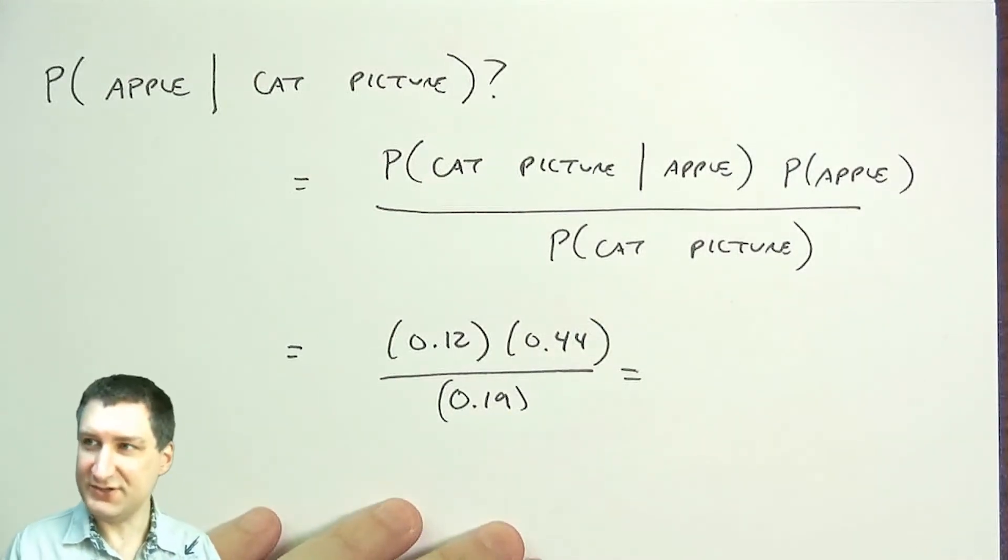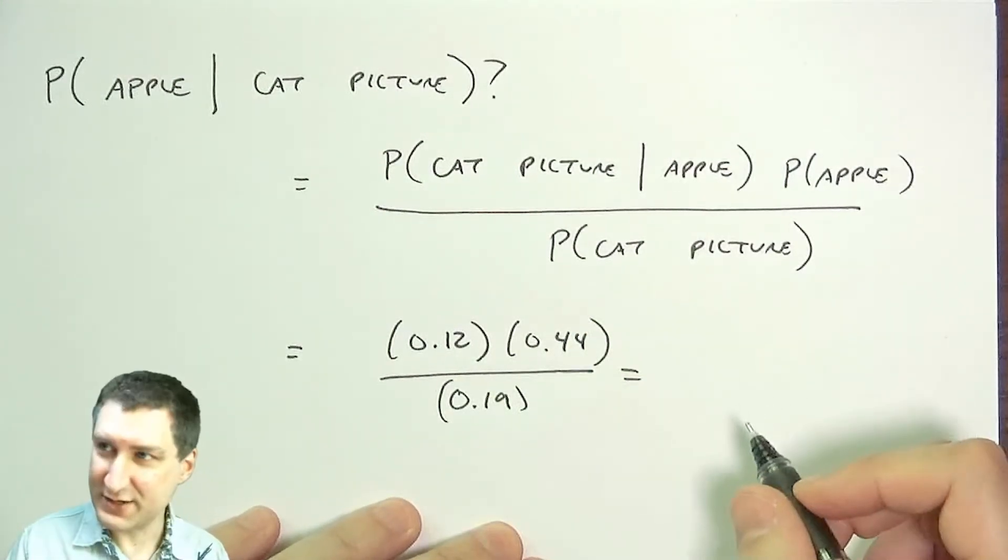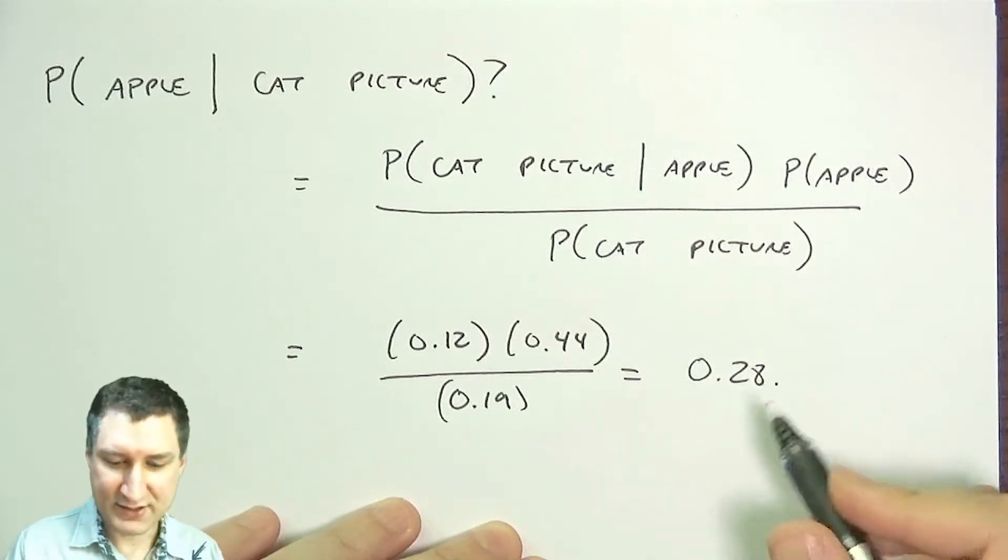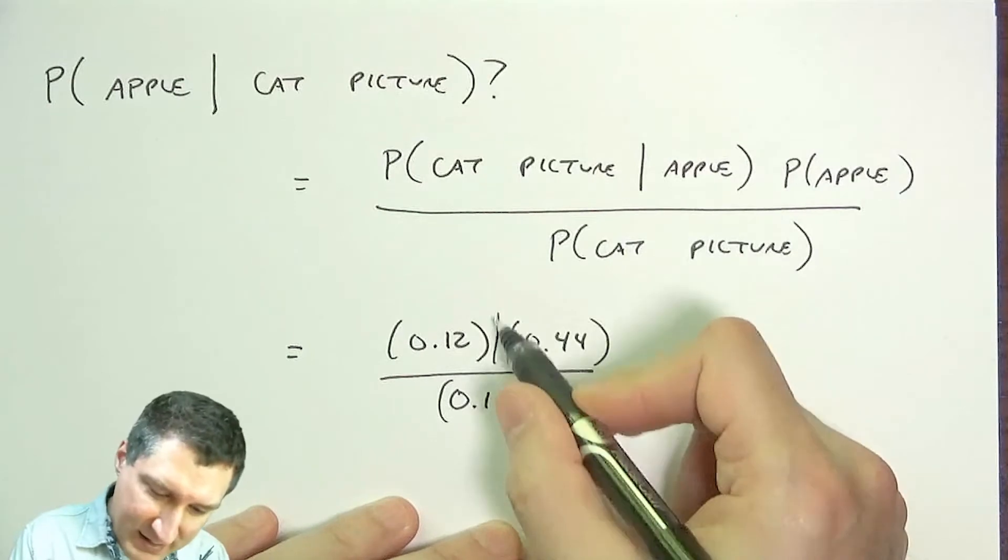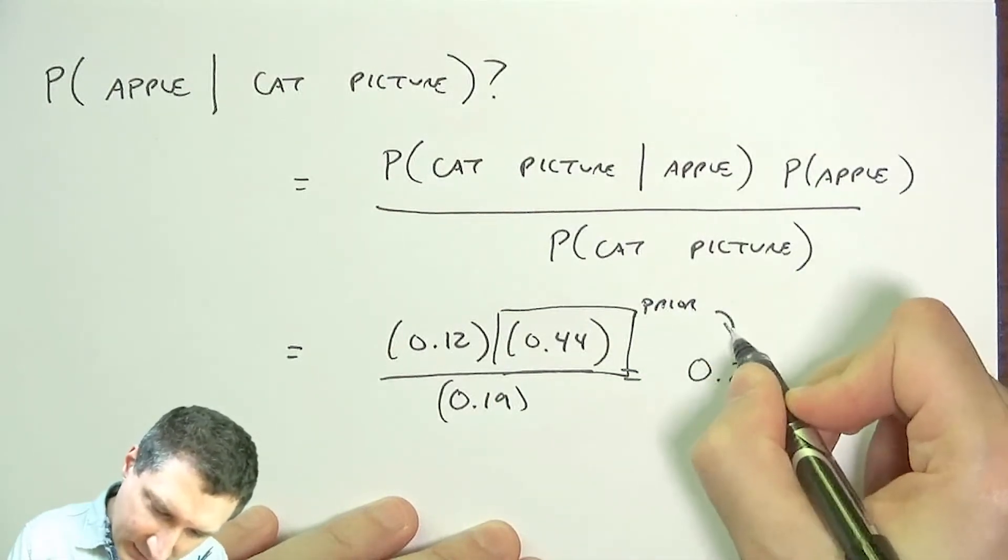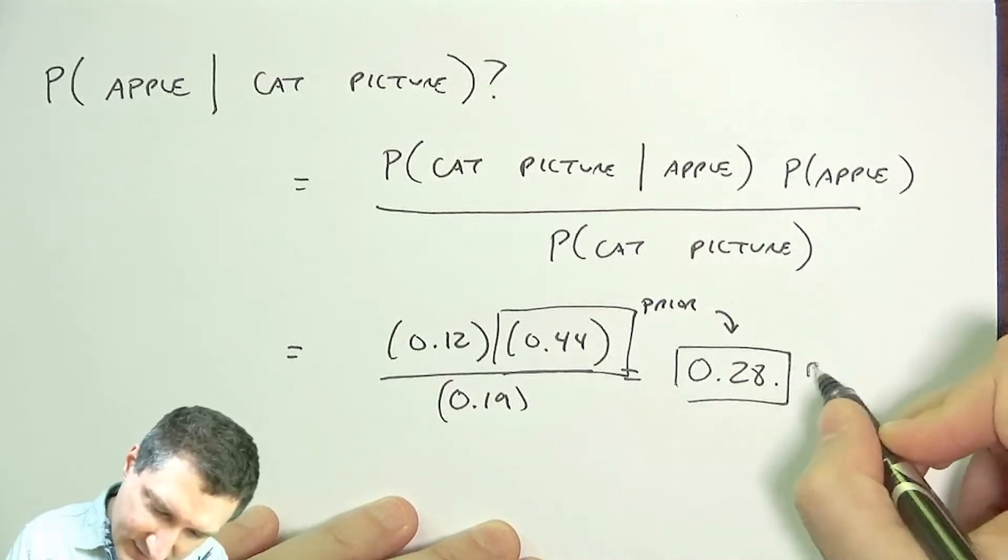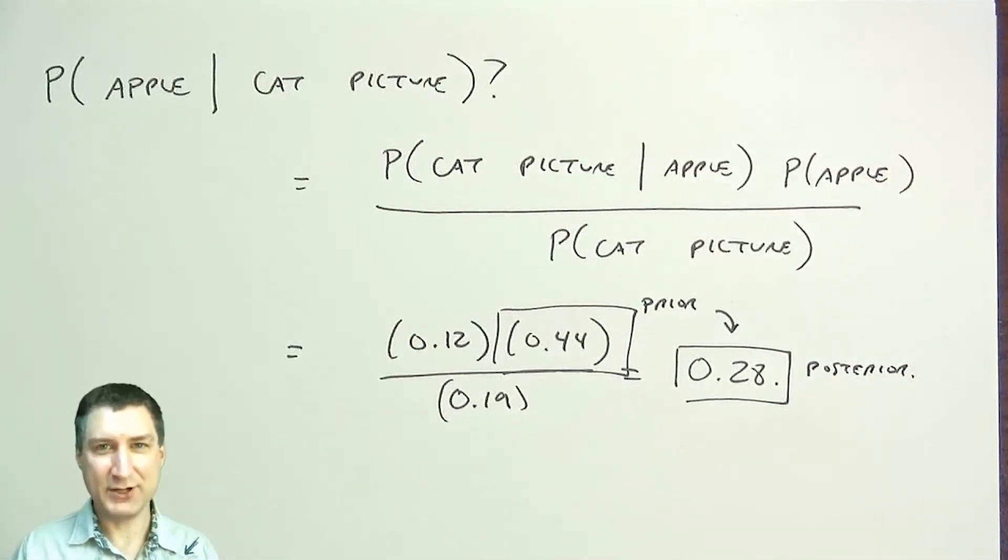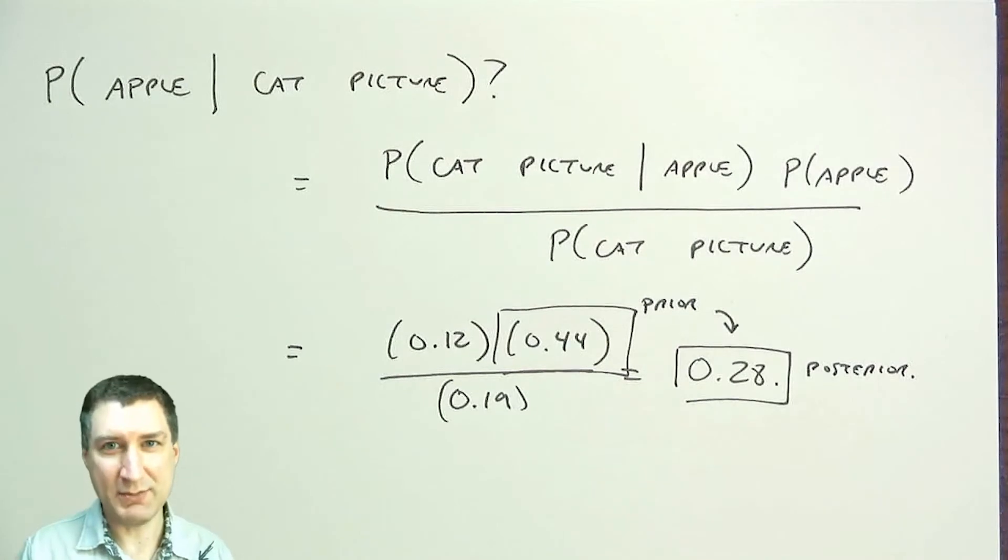And the result is if I multiply these numbers together and divide, I get 0.28. So what happened is that I kind of had my prior here and it got updated to this posterior value. So seeing the cat picture changed my underlying opinion about whether this traffic came from Apple, because Apple's users don't submit that many cat pictures and they make an overall smaller proportion of the number of cat pictures going around.